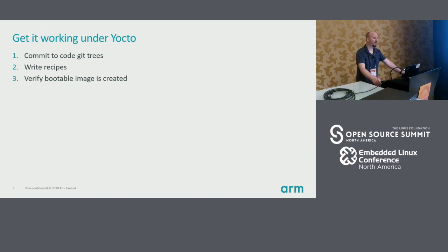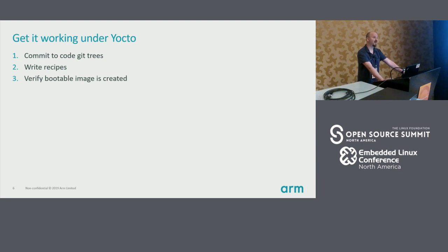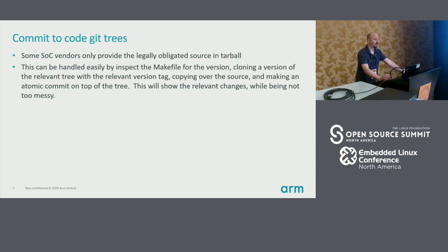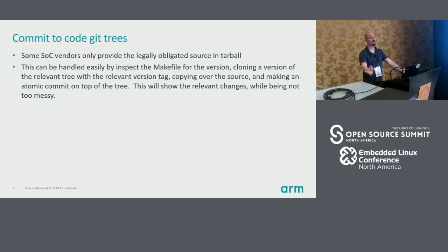So getting it to work under Yocto — three steps: commit to git trees, write the recipes, and verify that it actually works. Some vendors are super cool and will actually comply with the spirit of the GPL and give you a nice Git tree, maybe even host it on GitHub where you can get it very easily. And other vendors just give you a tar ball if you ask nicely and do the secret handshake.